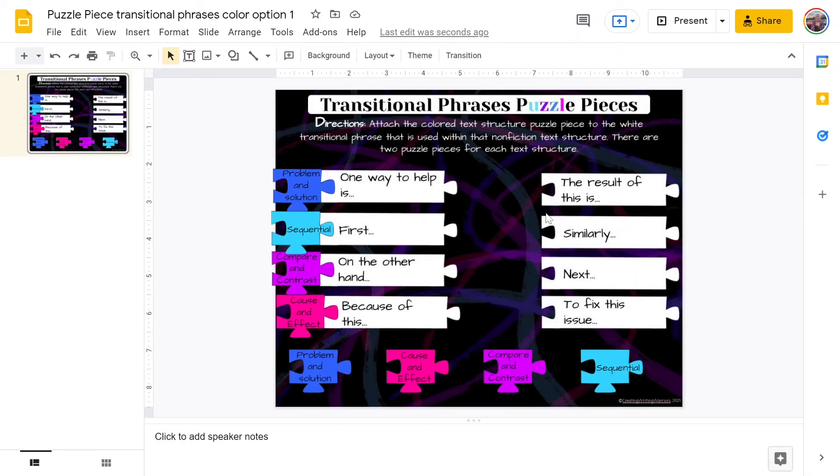We are going to move on to our right column. Starting at the top, it says the result of this is. Writers would use the term the result of this is if they were going to give an effect of a topic. So this is also cause and effect. We're going to grab that pink puzzle piece again and drag it up. Now I've used cause and effect twice. If you remember in the directions, it says there are two puzzle pieces for each text structure. This is just to help students make sure that they are picking different text structures.